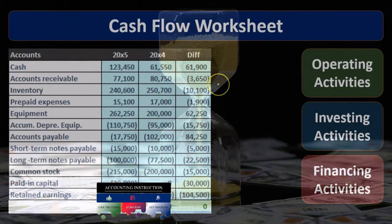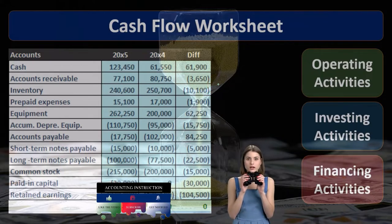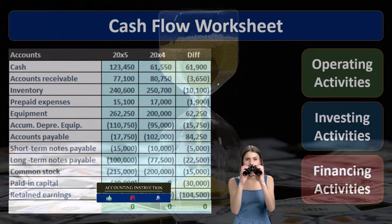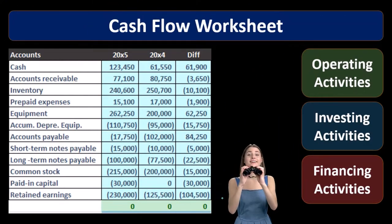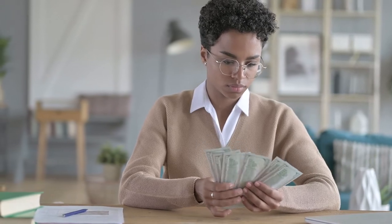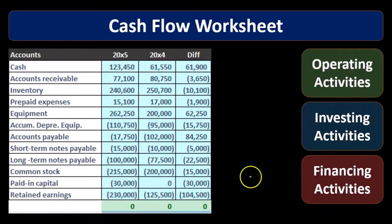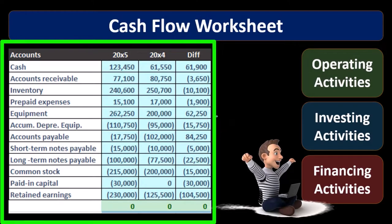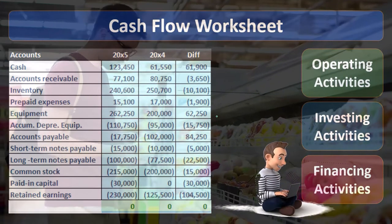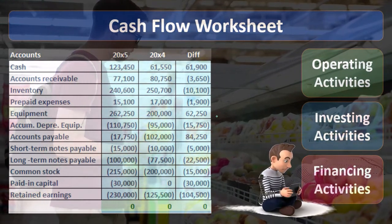The income statement reports the change in many of these accounts, so this is going to be the primary thing that we will look at. When we go to some of these items, however, we may not have enough detail. For example, if we look at the change in retained earnings, most of that is going to be net income. But we could have also had some other things happen — for example, dividends that were paid. The same issue applies to equipment: if we see a change in equipment, that could have been a purchase, but there might have been a loan on the equipment or some other things as well.